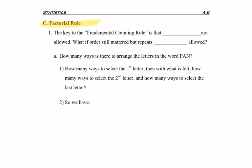Now let's start getting into a new process called the factorial rule. We just looked at the fundamental counting rule, and the key to that rule is that repeats are allowed. So if we still had order matters, just like in the fundamental counting rule, but repeats are not allowed, how does this change things?